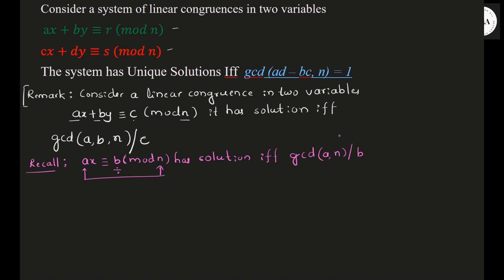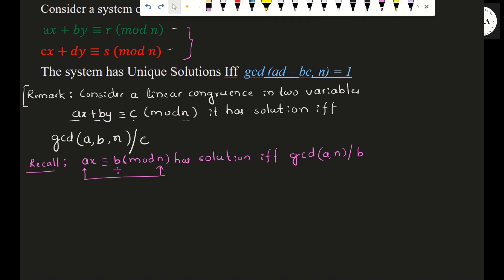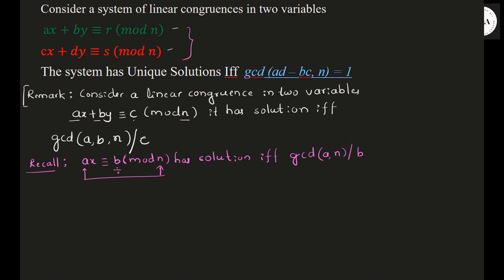In the same way, here we are considering two system of equations in two variables. That is why it has a solution if gcd of (ad minus bc, n) is equal to 1, then we say it has a unique solution. This is the statement for two variables. Now we will solve an example to understand how to find the solution of a given system of linear equations in two variables.